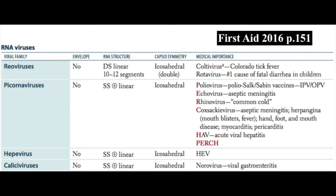Let's move on now to the RNA viruses. We will further classify these into those that have envelopes and those that do not. The RNA viruses that do not have envelopes are reoviruses, picornaviruses, hepeviruses, and caliciviruses.